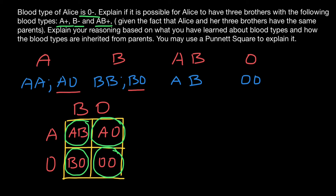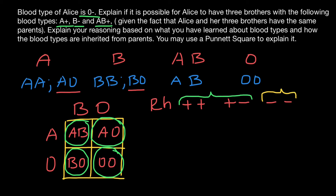Now let's return to the second half of this question. Is it possible that some of the brothers would have an Rh or Rhesus factor which is positive and some which is negative? The Rhesus factor, or Rh, can be of two phenotypes: either positive or negative. But this is made by three genotypes: positive-positive gives a positive Rh group, positive-negative also gives a positive Rh group, and negative-negative gives a negative Rh group.